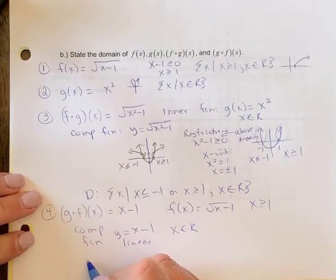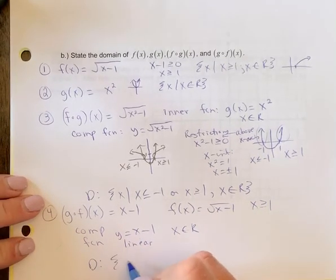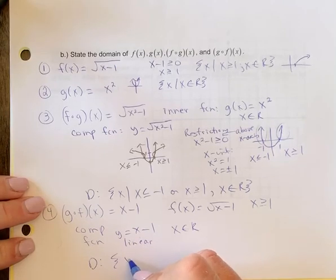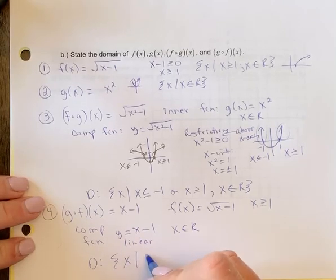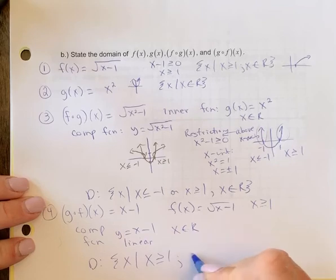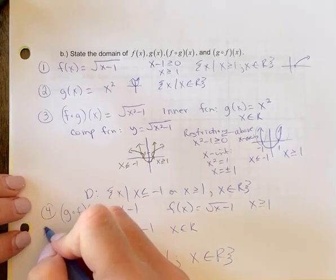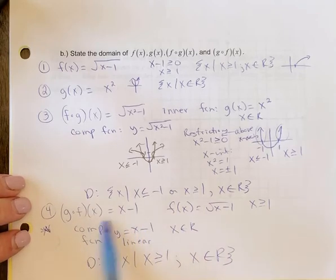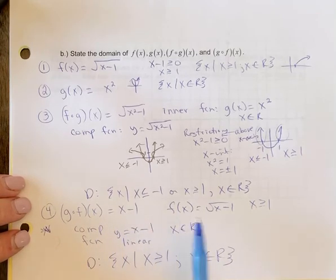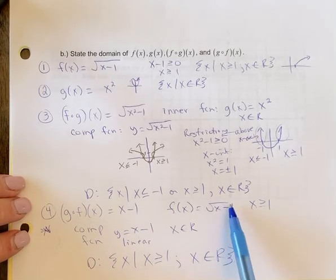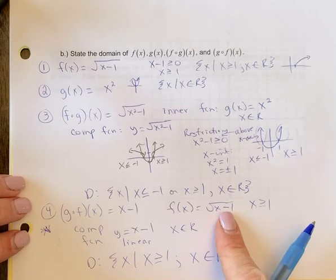So that means that our domain for our final answer there is x is greater than or equal to 1, where x is the element of all real numbers. So this is the one to watch out for, because had you just looked at the domain of your final answer, you would have said x element of reals.